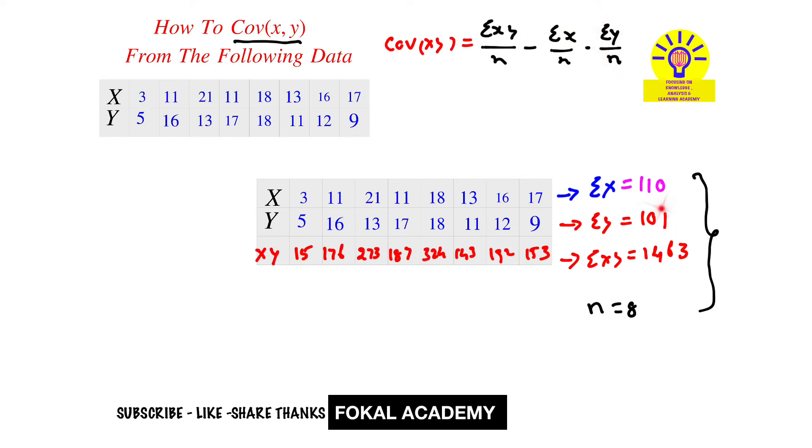Now substitute all the data in this equation. We get 1463 by 8 minus 110 by 8 into 101 by 8. By simplifying this we get covariance of x comma y is equal to 9.28125, and this is the required value for the given problem.